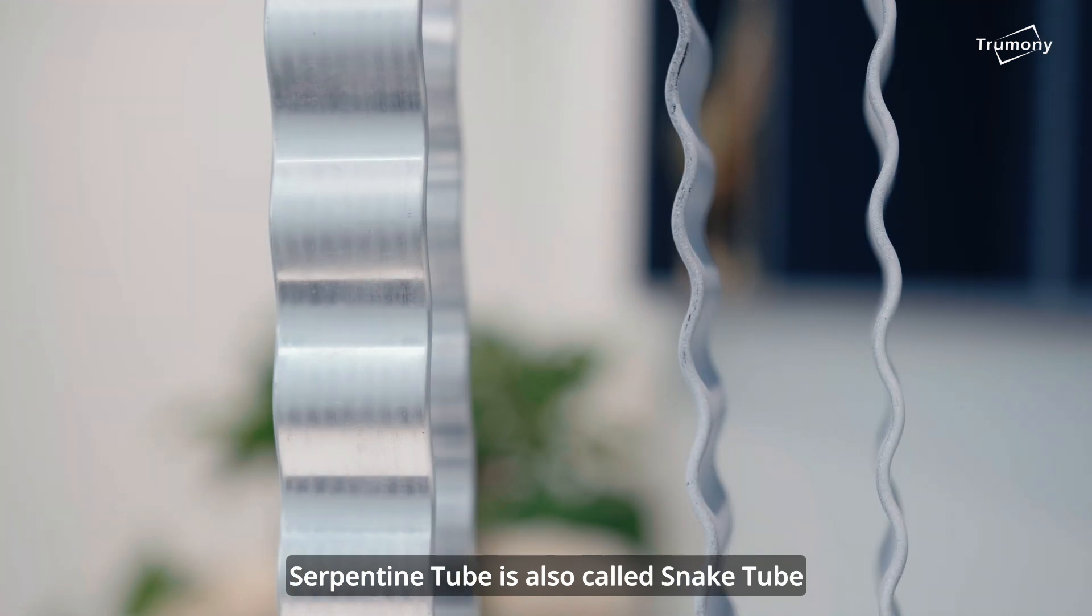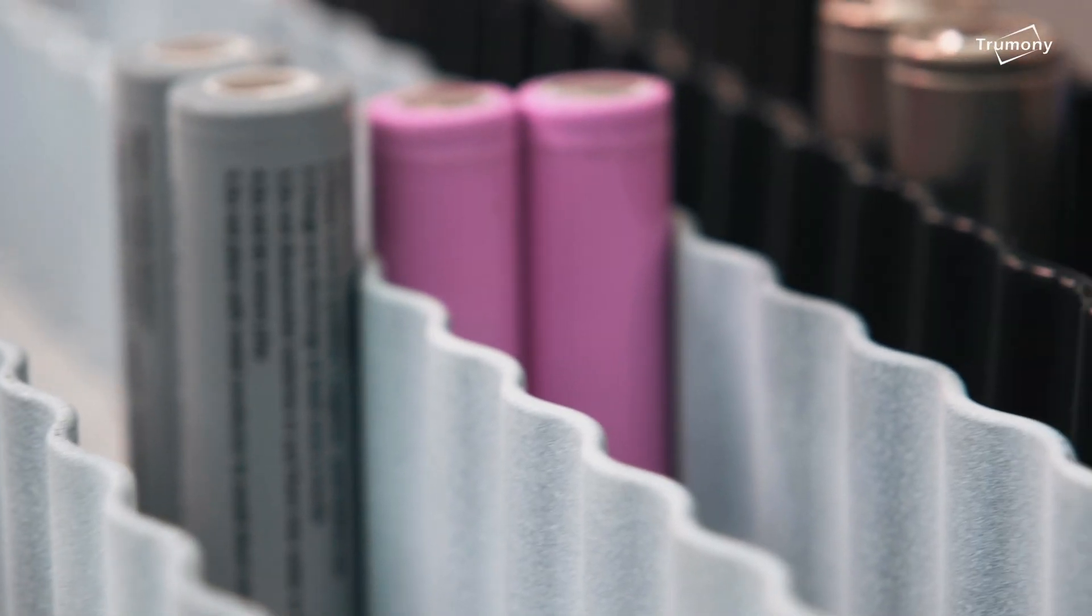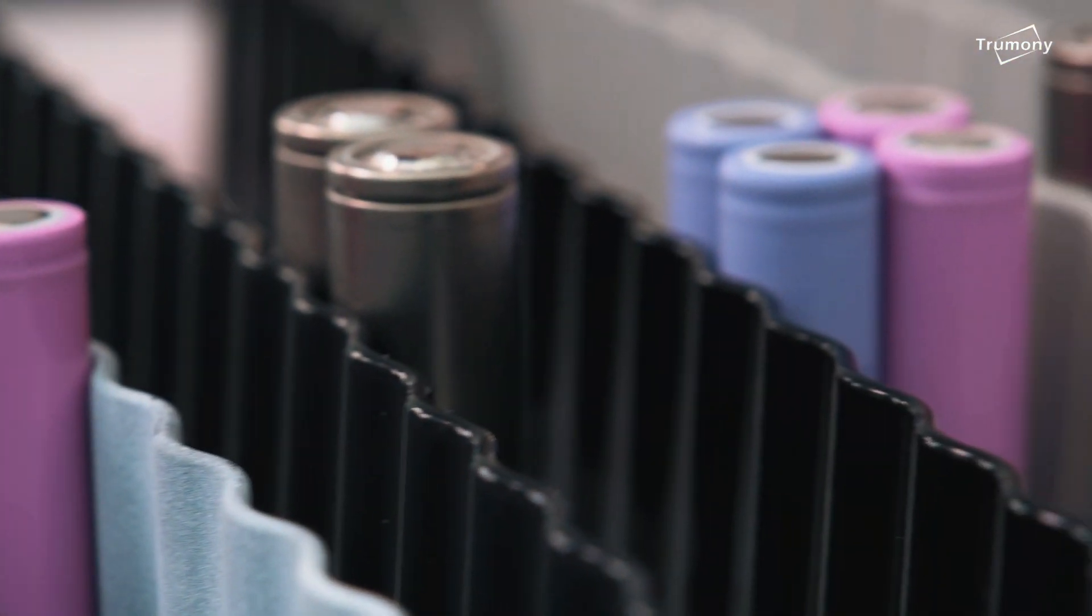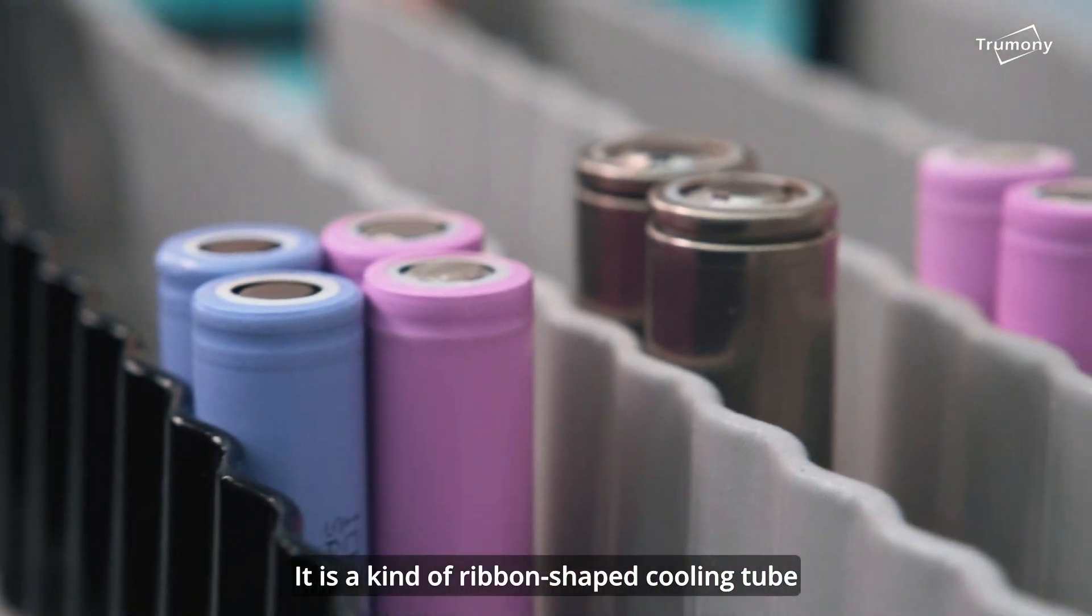Serpentine tube, also called snake tube, is a kind of ribbon-shaped cooling tube.